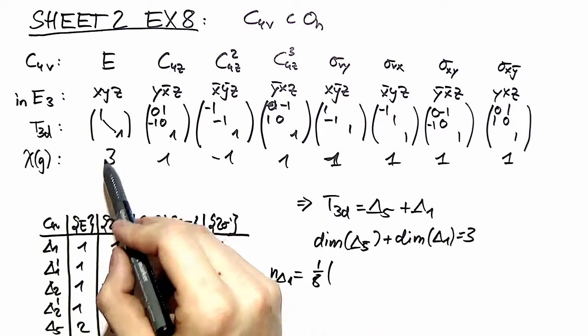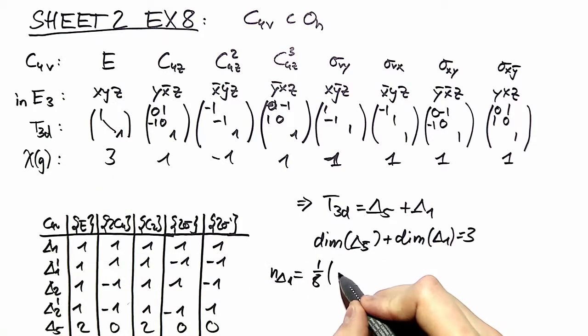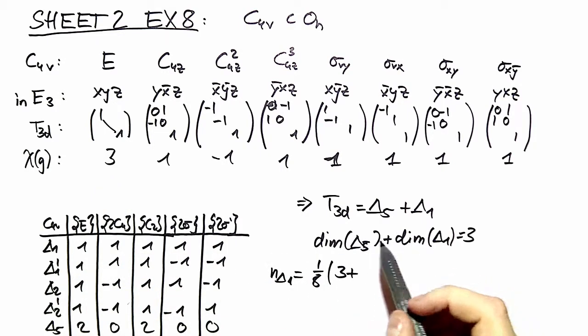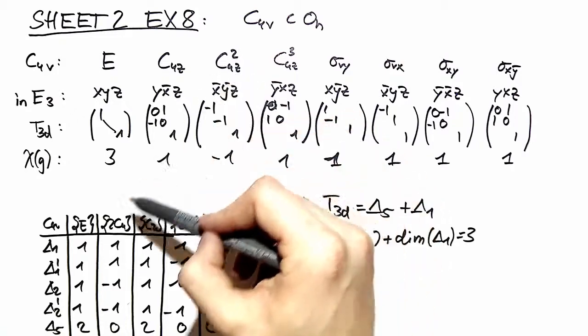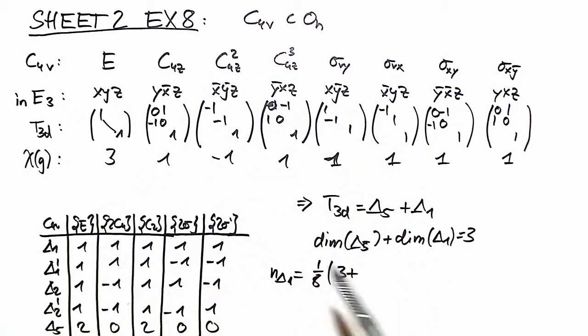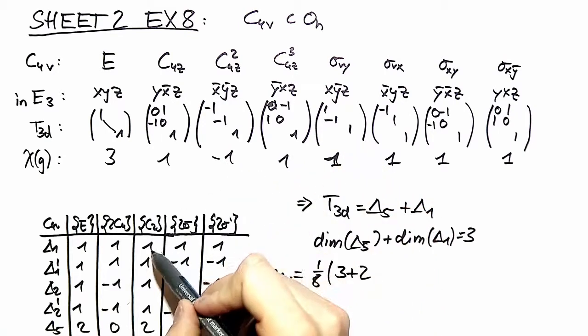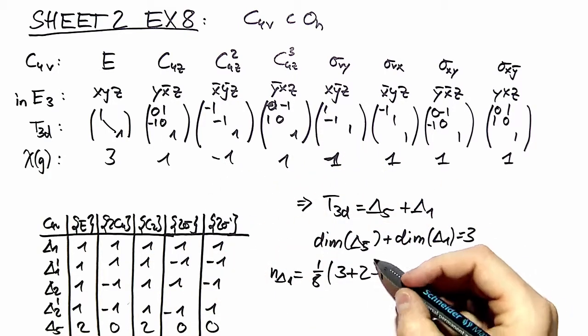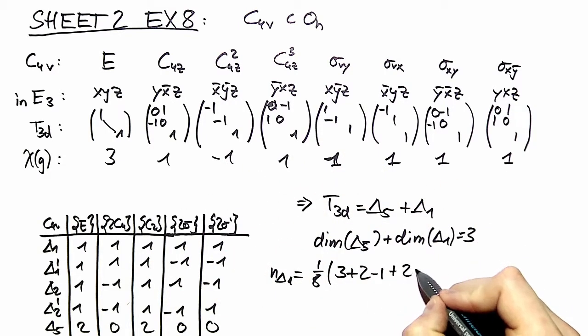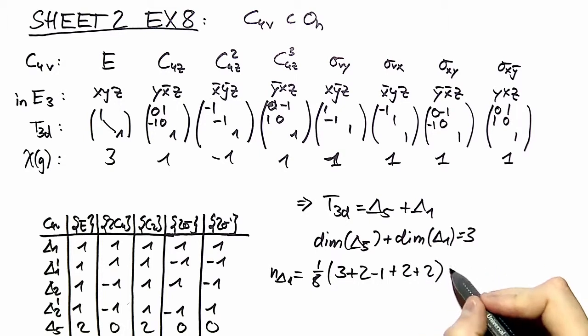Then we take 3 × 1 × 1 = 3, then we take here 1 × 2 × 1 = 2, then we have -1 × 1, in the same way +2 +2, which equals 1.